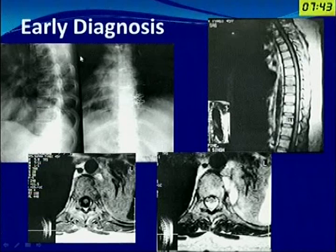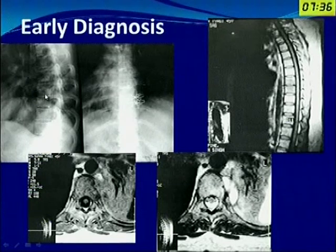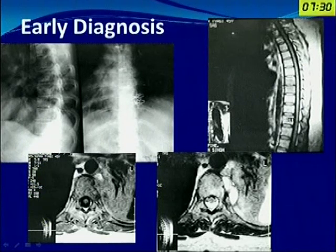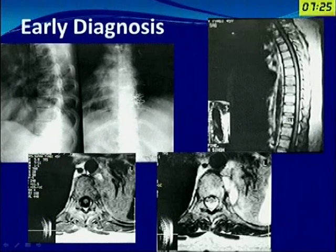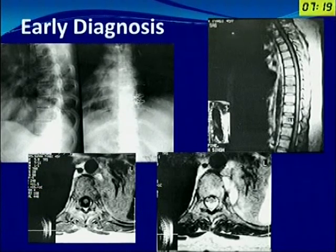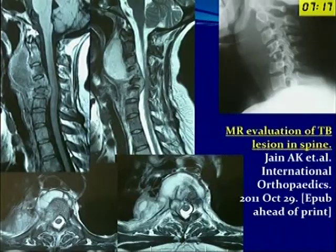This is an example: this young patient has persistent pain, and this disc space shows a slight reduction from above. The MRI shows a two-vertebral disease, and one could see here on T2-weighted and T1-weighted images a paravertebral shadow as well. If by any means you are able to diagnose the disease at this stage and start treatment, then the patient is going to heal without deformity.